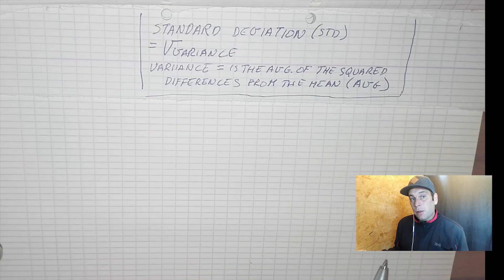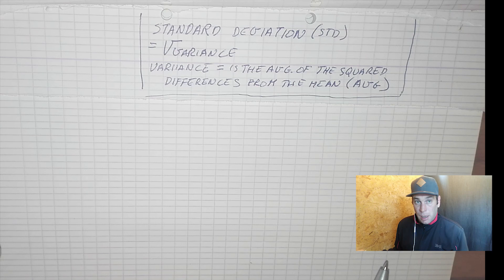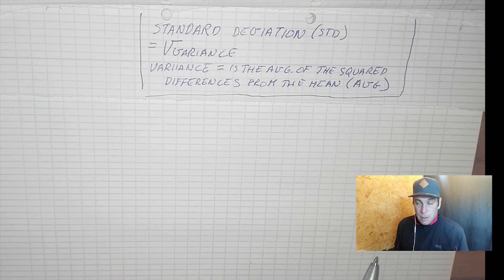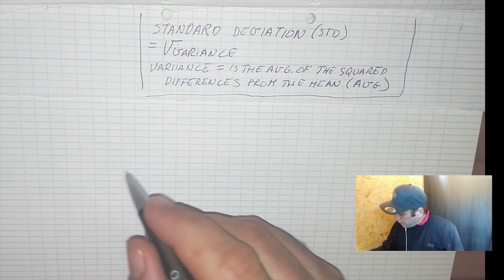Today we will calculate the standard deviation in JavaScript. We will make a function to calculate the standard deviation. The standard deviation is the square root of the variance. And what is the variance? The variance is the average of the squared differences from the mean. Sounds complicated but actually it's very simple — I will explain it on a piece of paper.